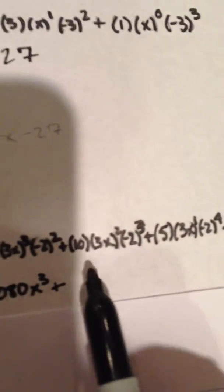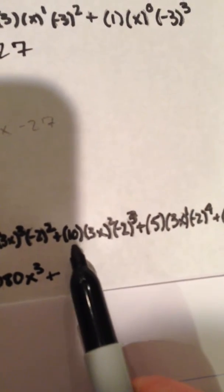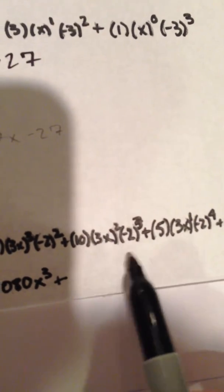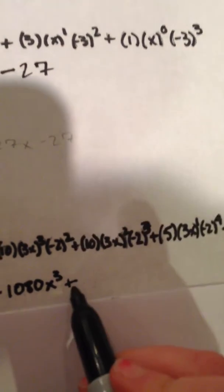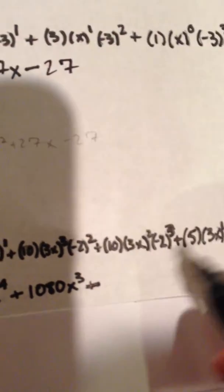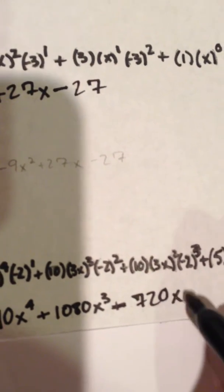We have our next term multiplied by 10, 3x squared times 10, which is 90, times negative two to the third power, which is negative eight. This is going to be a negative. It gives us 720x squared.